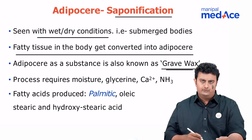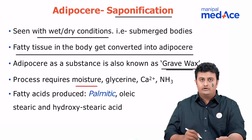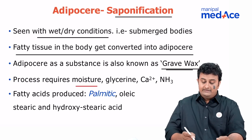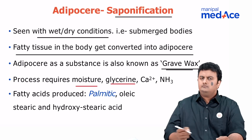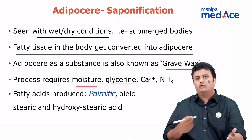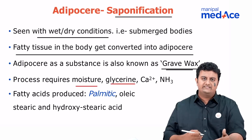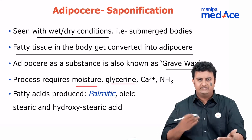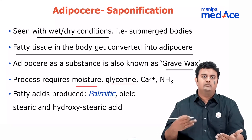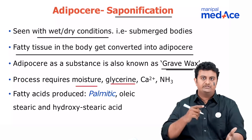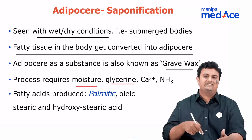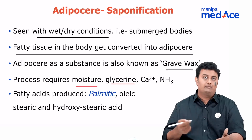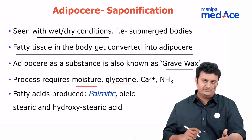The process requires a few things. Firstly, it requires moisture — very important. It only happens in moist climates. Then it requires glycerine, which is actually being produced by the body itself when fatty acids are being produced. The adipose tissue is being broken down, fatty acids are being produced, and glycerine will also be produced as a by-product. This acts as a positive feedback loop, helping cause more lipolysis or more adipose ear formation to happen.